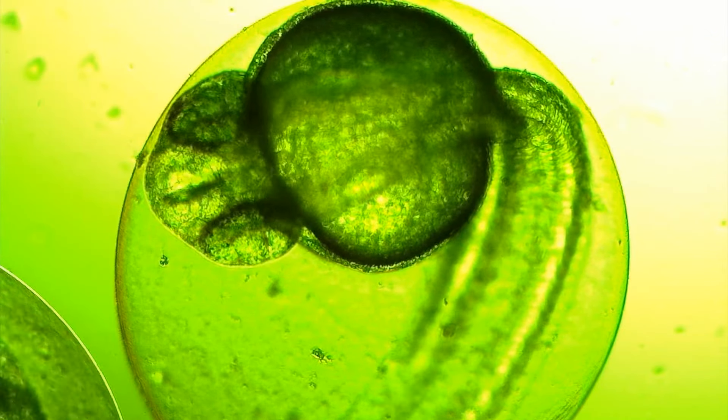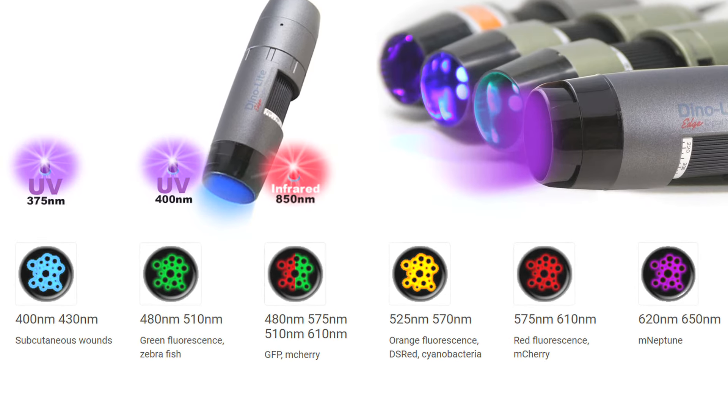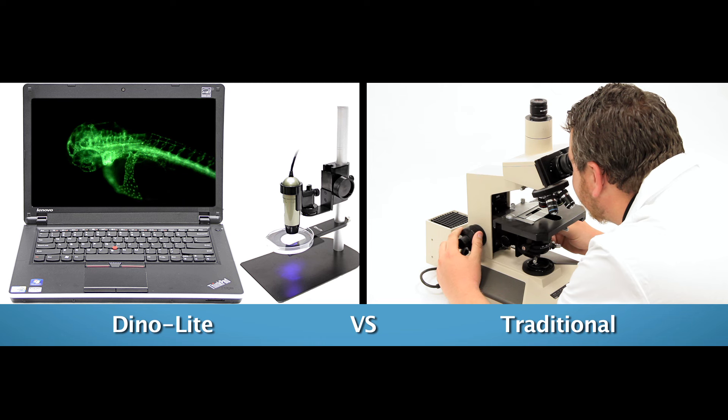The Dynolite is a handheld microscope camera that connects to a computer via USB, with most standard models going up to 220 times magnification.